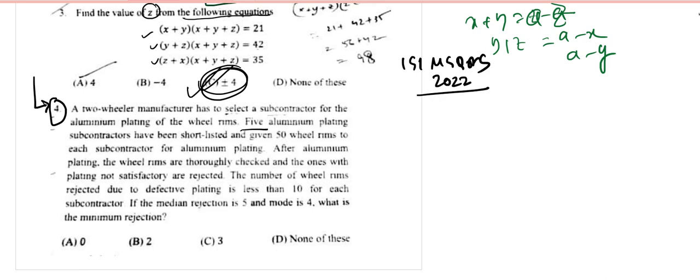Five aluminum plating subcontractors have been shortlisted and 50 wheel rims sent to each subcontractor for aluminum plating. After plating, the wheel rims are thoroughly checked and the ones with non-satisfactory plating are rejected. The number of wheel rims rejected due to defective plating is less than 10, and the median of rejection is 5 and mode is 4. Then the minimum rejection?